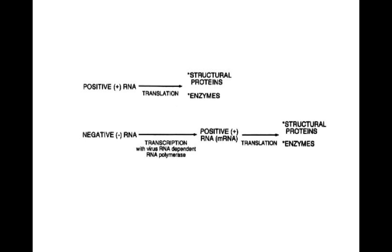Positive-sense RNA can immediately be translated to make the structural proteins and enzymes that are necessary for replication. It's not that the translation suddenly produces more viruses directly — first, they produce the enzymes that are necessary for that virus to start replicating. They produce those enzymes, those proteins, first.